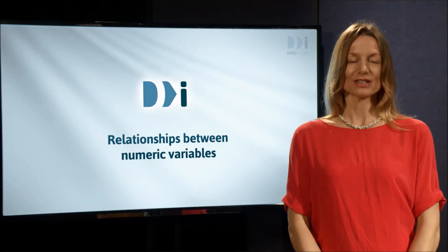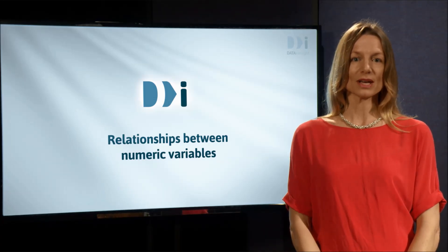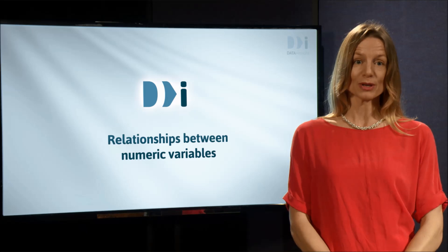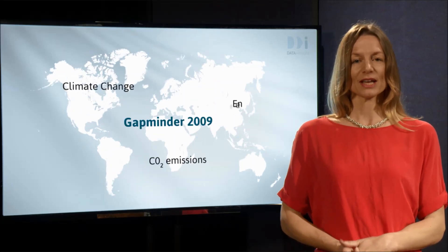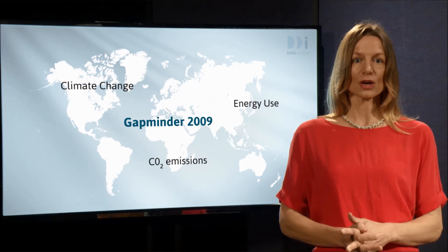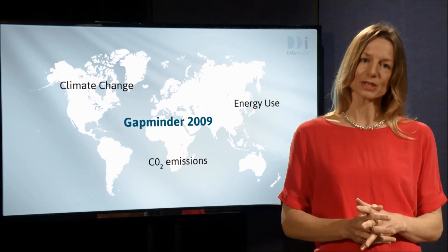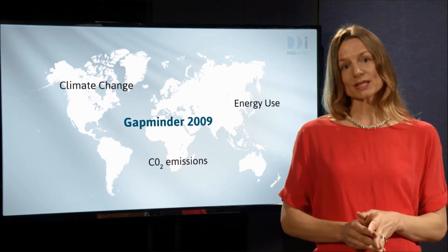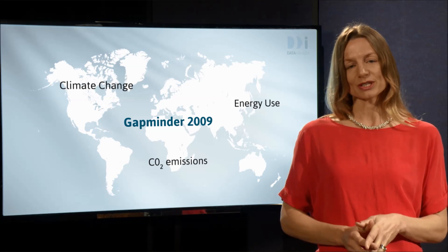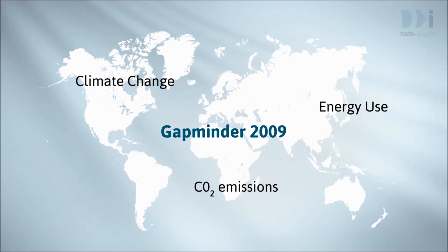We'll now turn our attention to visualising relationships when both variables are numeric. We're going back to country-level data from Gapminder, and we'll look at 2009 data on some of the variables that figure in climate change discussions. We will look at per person CO2 emissions and energy use. 2009 is the most recent year for which this data is reasonably complete.